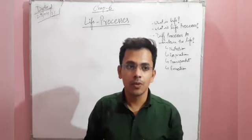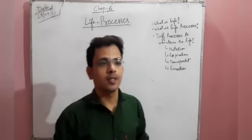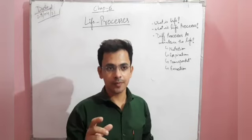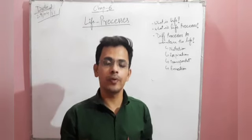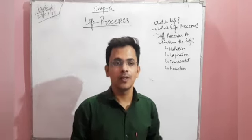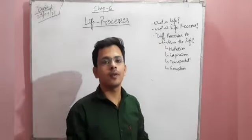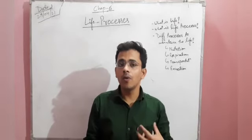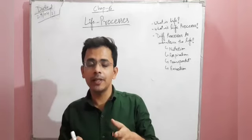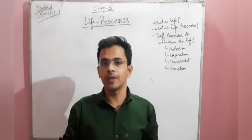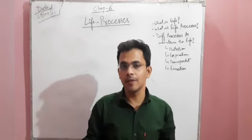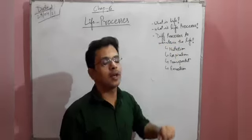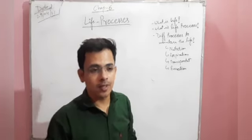The major topics we will cover in this chapter are some basic phenomena that occur in our body to maintain life processes. These include nutrition, respiration, excretion, and transportation. We will first understand what life is and how it works, then what life processes are and how life is maintained continuously, and when we say life is over for a particular organism. We'll also discuss different processes to maintain life.